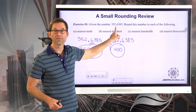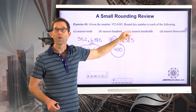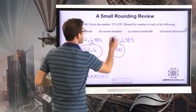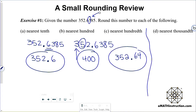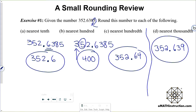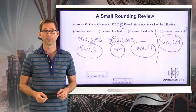In a decimal, the first decimal place is tenths, then hundredths, then thousandths, then ten-thousandths, then hundred-thousandths, then millionths. To round to the nearest hundredth, the hundredth place is my three. I look at the digit one place after — that's an eight — so I round up to 352.64. For the nearest thousandth, I look at that five, and since it's five or above, I round up to 352.639.